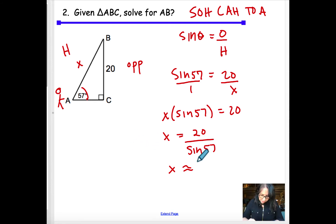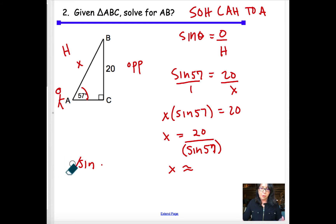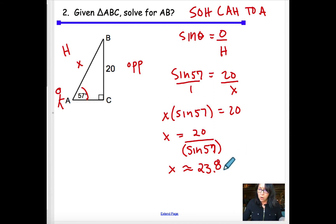On the calculator, go 20 divided by — and remember, use parentheses or you'll get the wrong answer, because the calculator will divide by sine first and then multiply by 57. Use parentheses: 20 ÷ (sin(57°)), close parentheses. You get 23.84, which is just 23.8. Box that up — that's your answer.